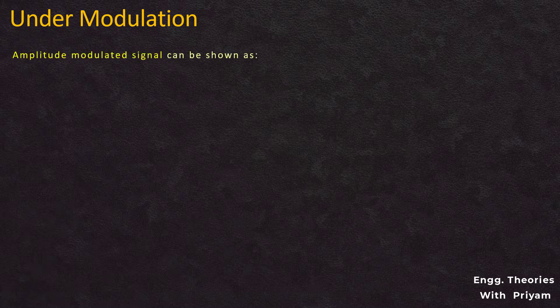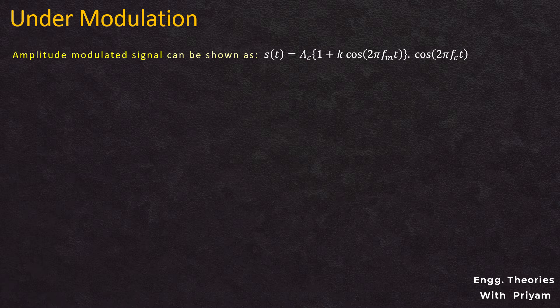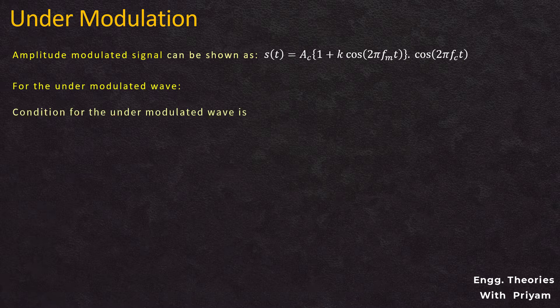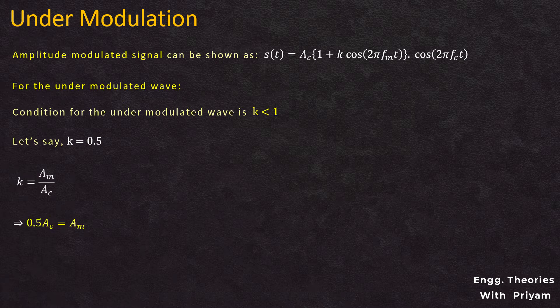The amplitude modulated signal is st = ac·[1 + k·cos(2π·fm·t)]·cos(2π·fc·t), where k is the modulation index. For the under modulation condition, k < 1. Let's say k = 0.5. From the definition of modulation index, k = am / ac, so 0.5·ac = am.